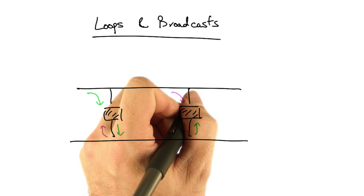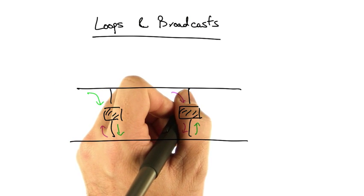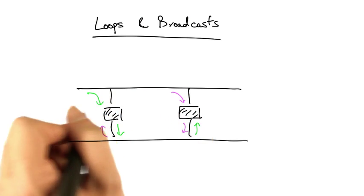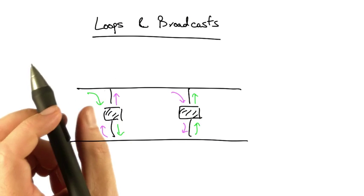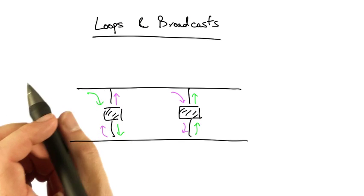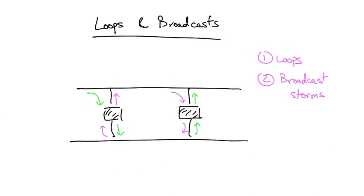They, in turn, will not know that they shouldn't rebroadcast the packet that they just heard. So each of those switches will, in turn, rebroadcast the packet on their outgoing ports. And of course, this process will continue, creating both packet loops and what are known as broadcast storms.